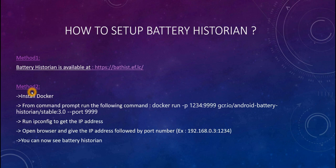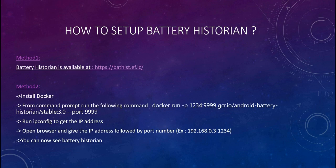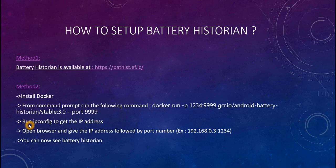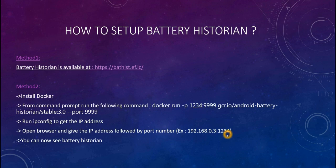So what we do is set up our own Battery Historian through method two. I am describing these steps for a Windows 10 PC. In Windows 10, you need to install Docker — the Docker exe file is available online. After installing, open your command prompt and run the following command: docker run with port 1234 and 9999, followed by the battery stats historian image name. This installs Battery Historian through Docker with the specified port number. Then run the ipconfig command to get your PC's IP address.